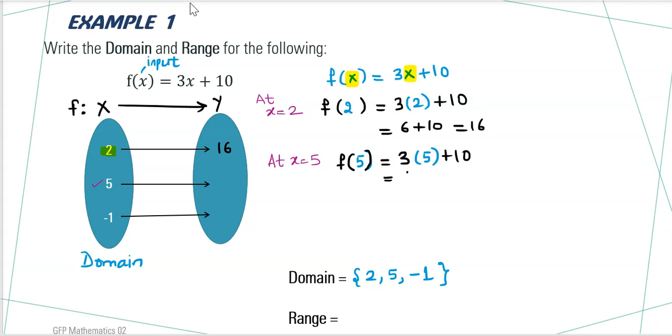This gives you 3 times 5 is 15 plus 10 which gives you 25. So 5 is mapped to 25.